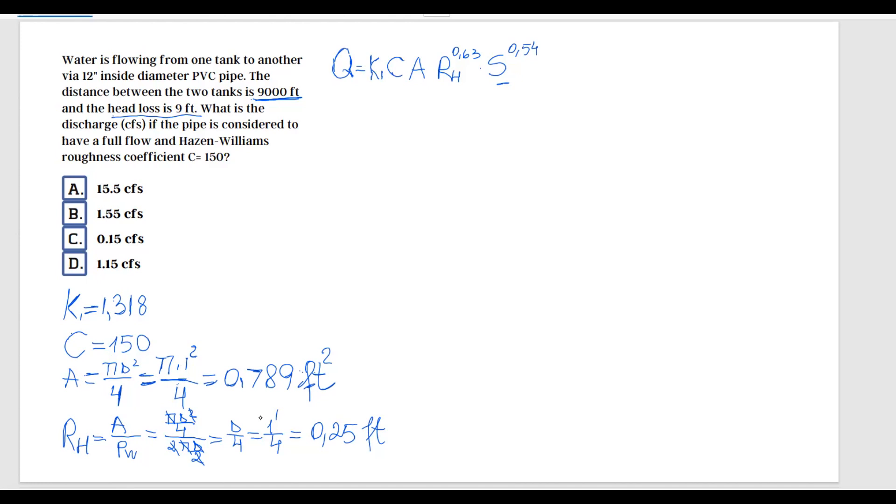Let's see what this means. If I think about the length between those two tanks and the head loss, let's say this is the elevation of tank number one and then somewhere here is the elevation of tank number two. So we are told that this distance is 9,000 feet.